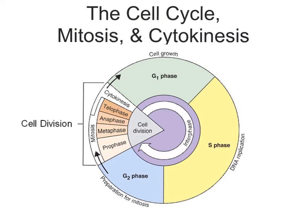As we discussed earlier in the year, cells function best when they're small, but they do grow, and then we always need more cells for both organismal growth and repair of tissues. So that's where the cell cycle comes into play.